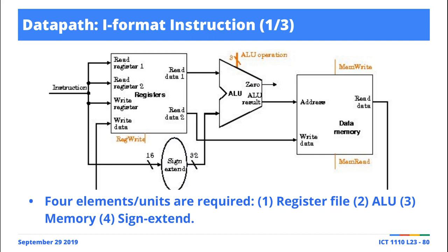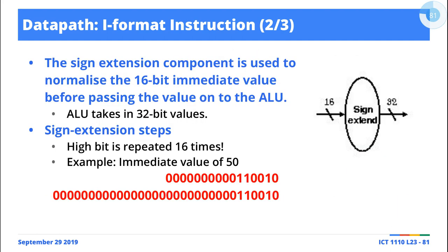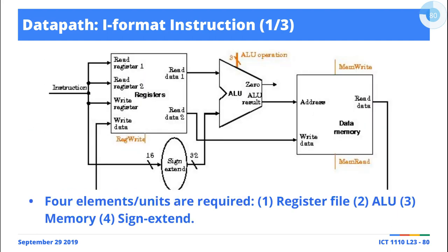If that immediate value is going to be used as part of some computation, it needs to be reconciled to the expected bit representation for typical MIPS data, which is 32 bits. The sign extension effectively converts the 16-bit value into an equivalent 32 bits.